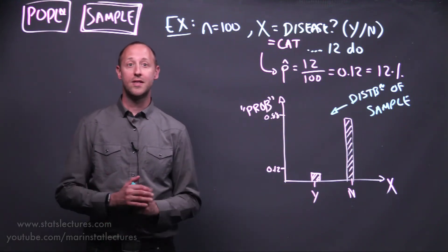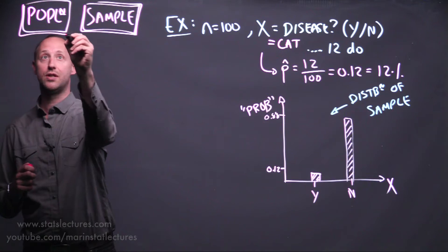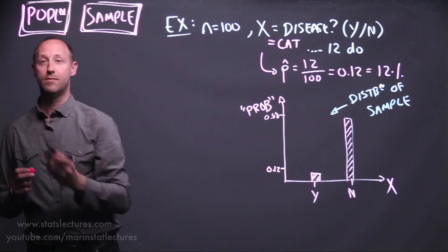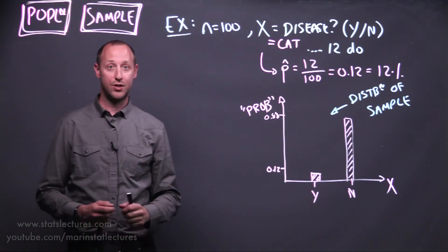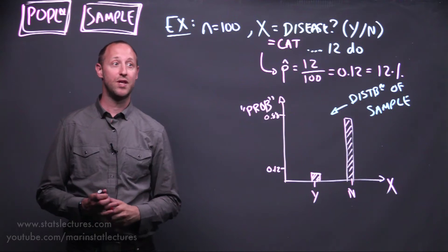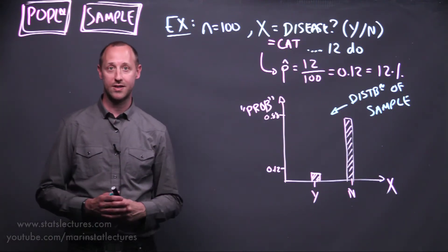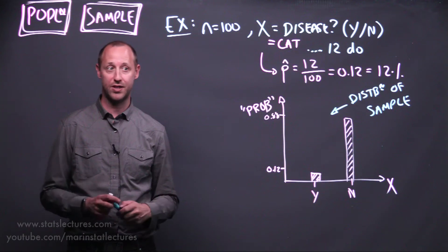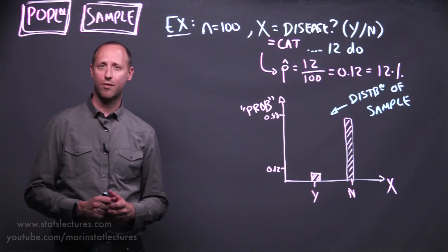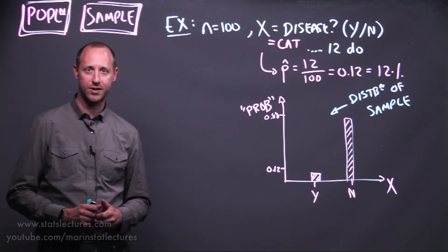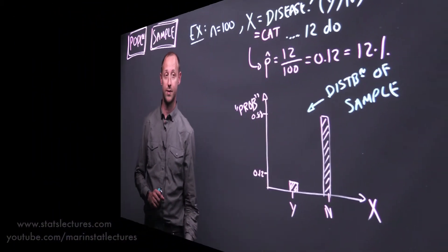Now let's think about what if we could know everything about the entire population. Suppose we knew the true probability of having the disease within a population. Here we can think of modeling this, or using a probability distribution to describe this — the idea of a theoretical probability distribution. These are described in Module 2 of the course.